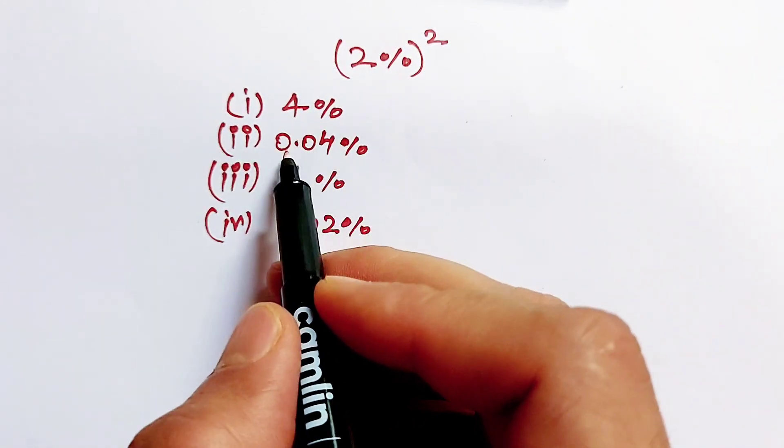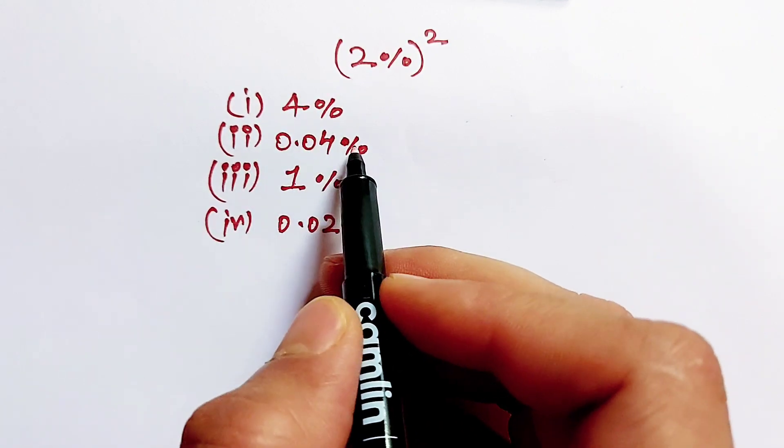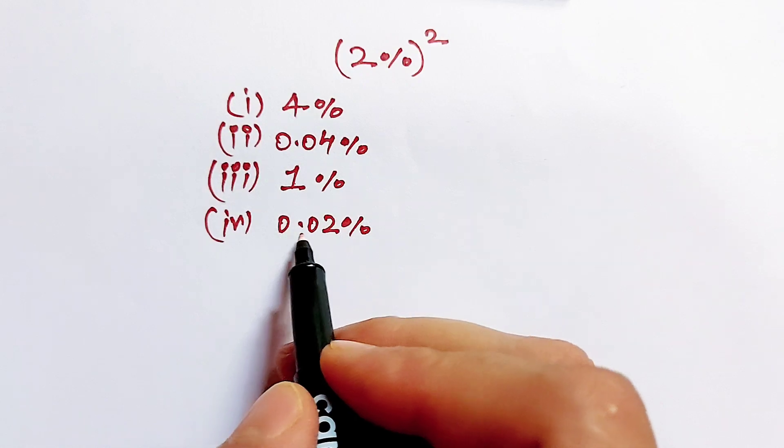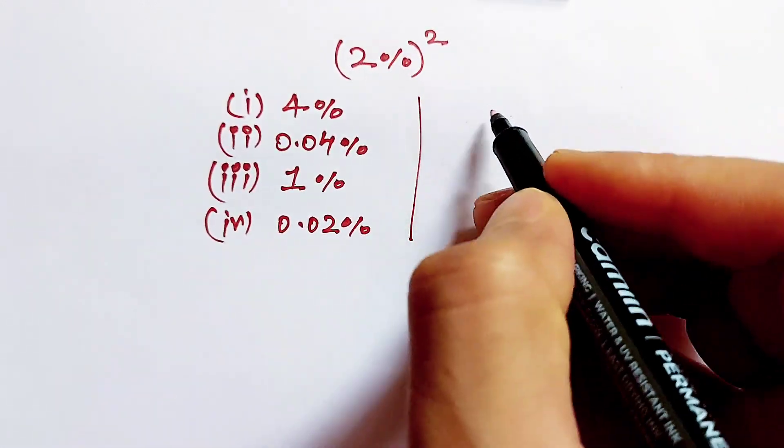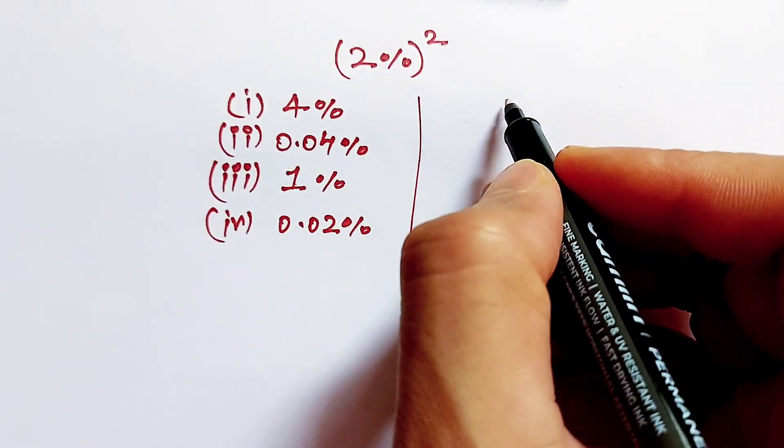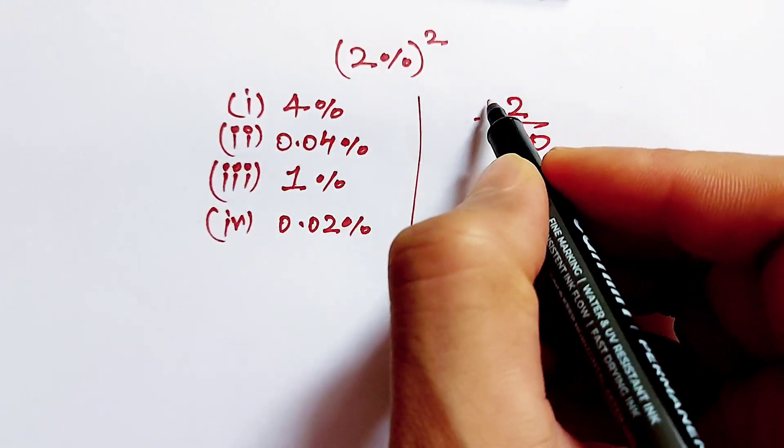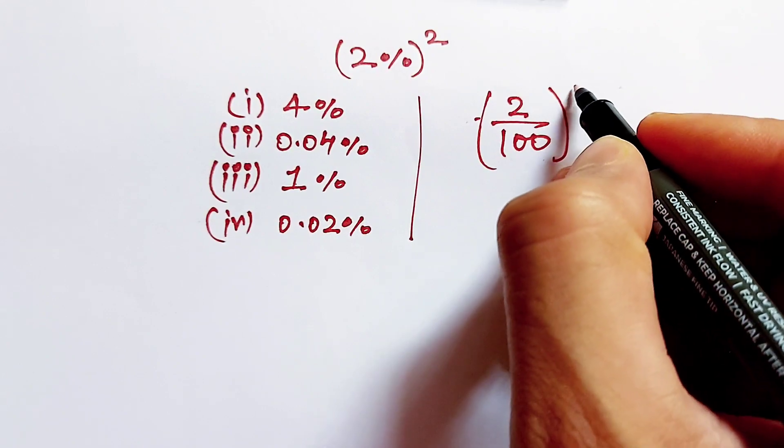It is 4%, it is 0.04%, it is 1%, it is 0.02%. Now we can write this 2 percentage as 2 over 100 and power of 2.